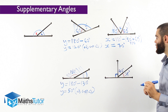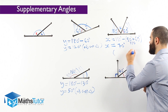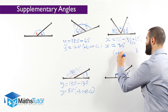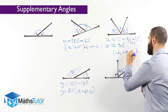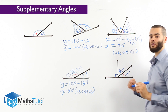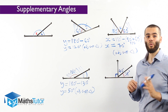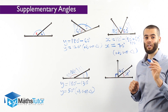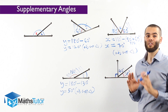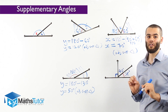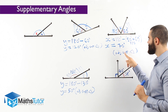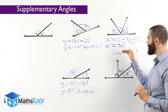X is 70 degrees, and our reason all the time is adjacent supplementary angles. We always give the reason. If the question says give a reason — and even if it doesn't — always give a reason, just in case. We always write: x is 70 degrees, adjacent supplementary angles. We show the working out, we show the answer, and we show our reason.